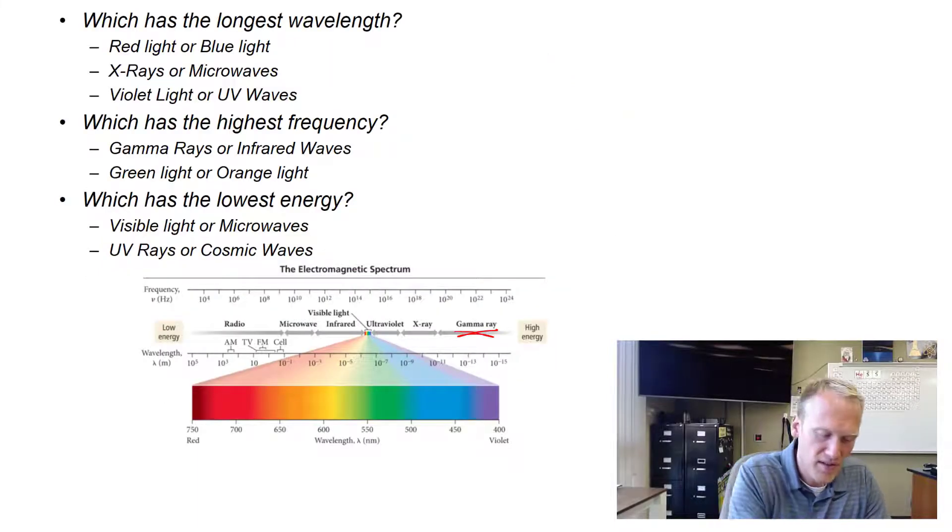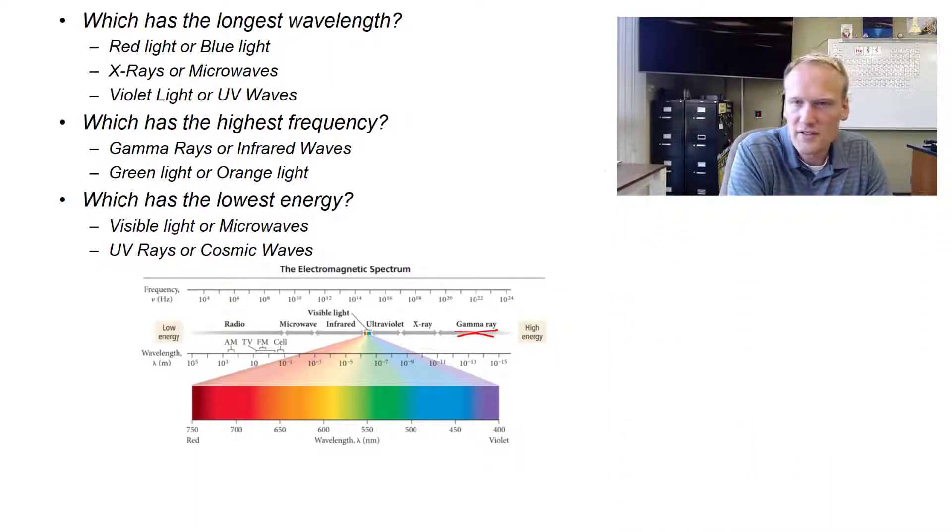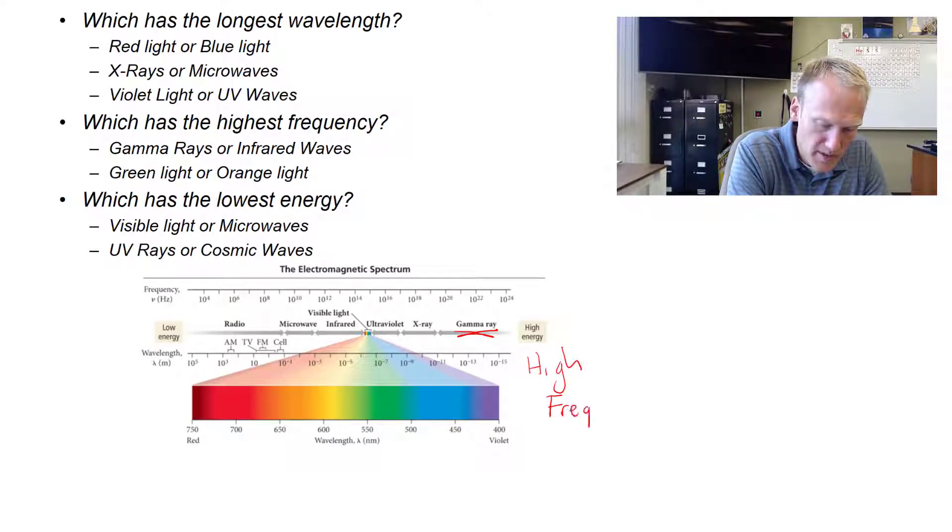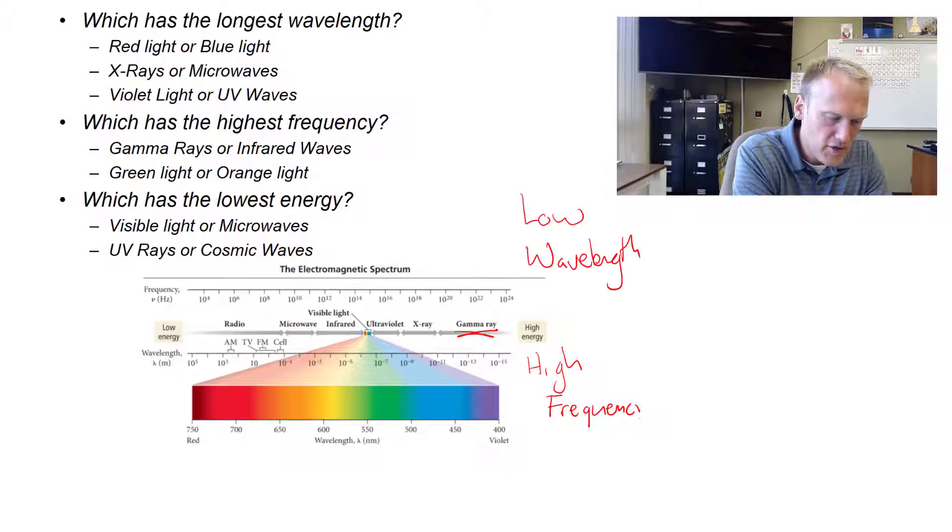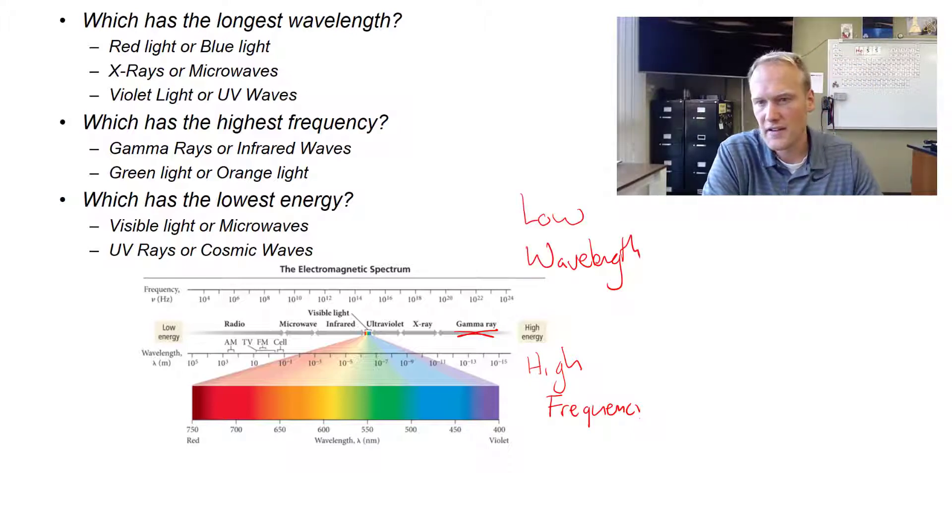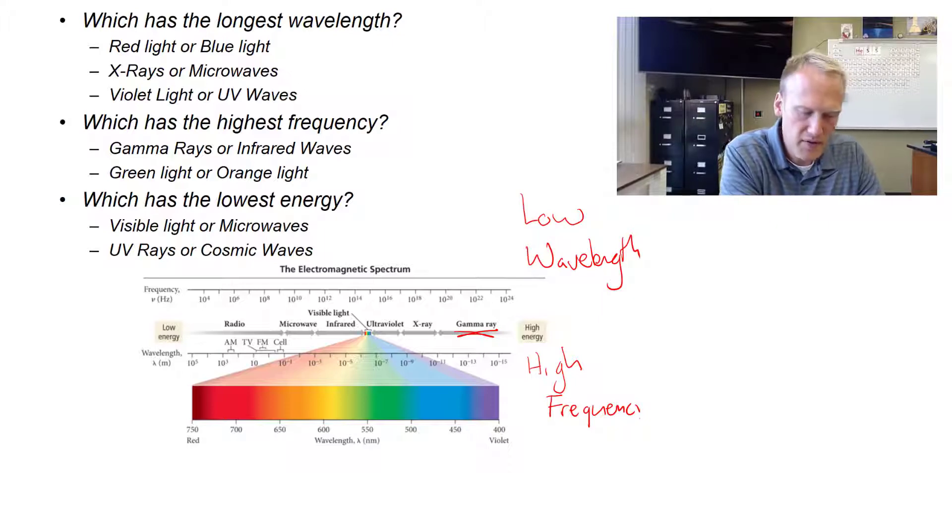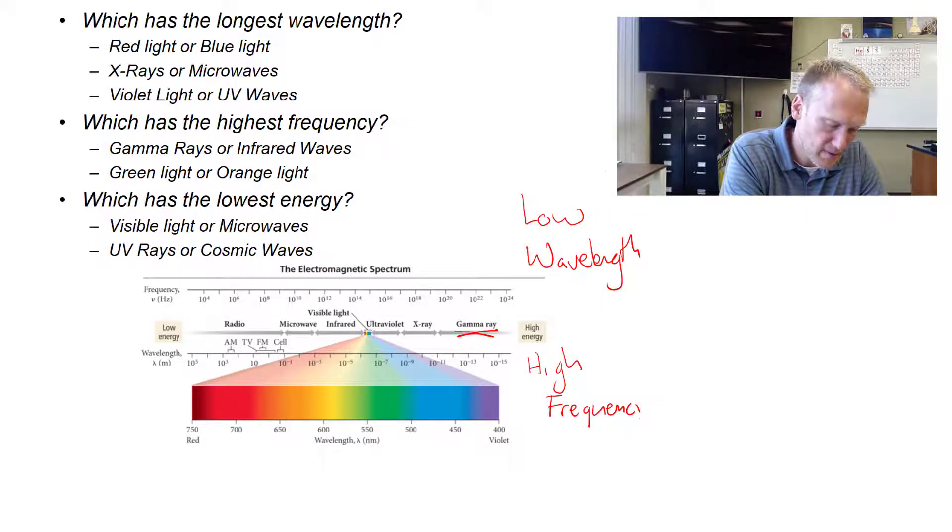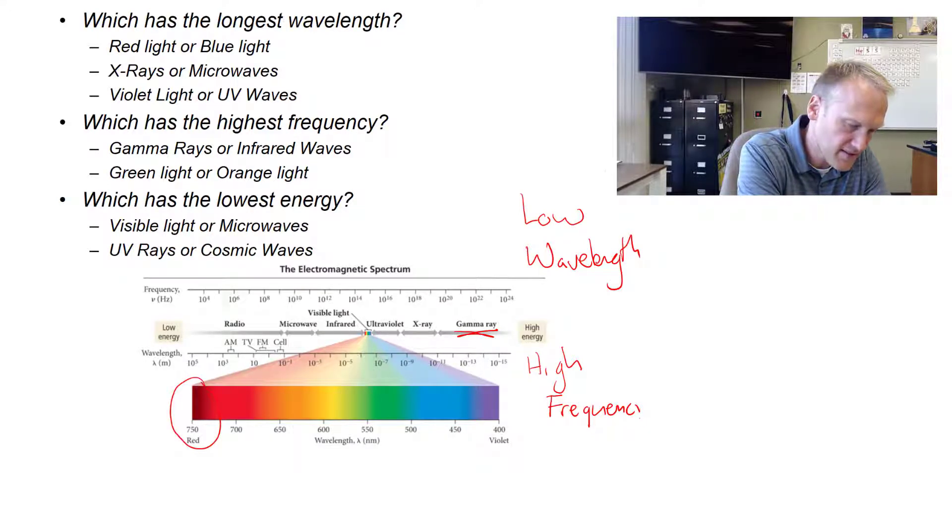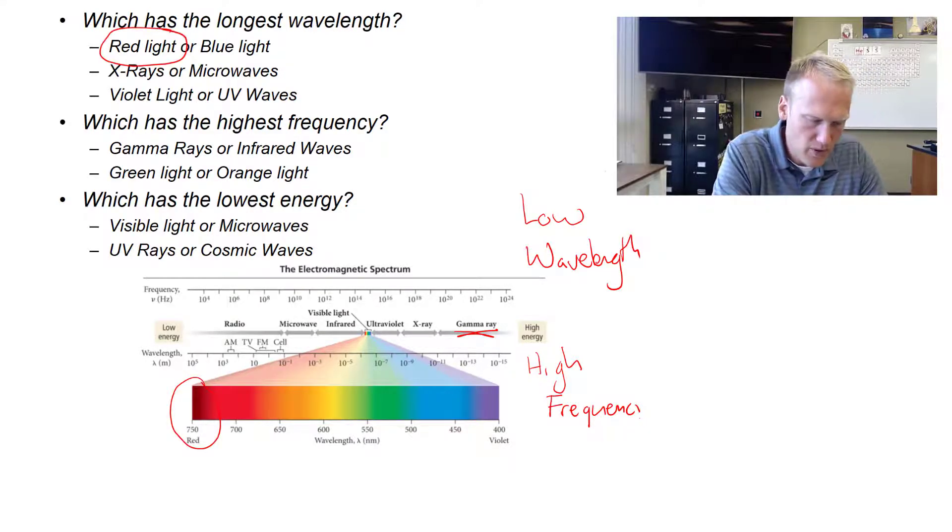Now we can ask some questions. Gamma radiation is high energy, high frequency, and low wavelength. Which has the longest wavelength? That would be the one furthest to the left. Red light or blue light? Red light. What about x-rays or microwaves? Microwaves would be farther to the left than x-rays.